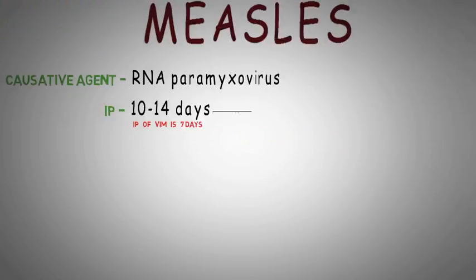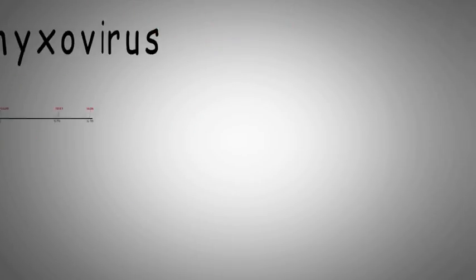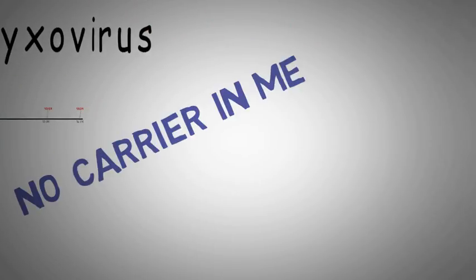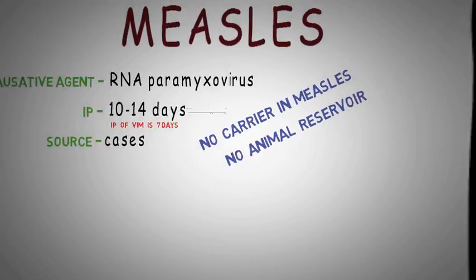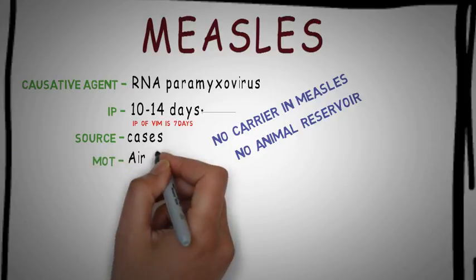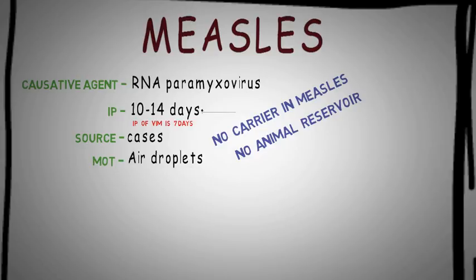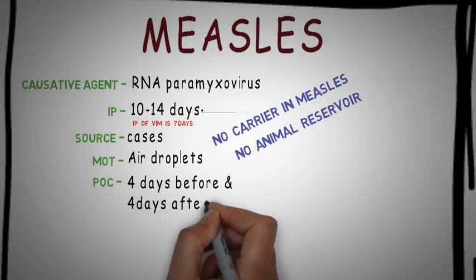The source of measles infection is from cases. There is no carrier in measles and there is no animal reservoir either. The mode of transmission of measles is by air droplets.